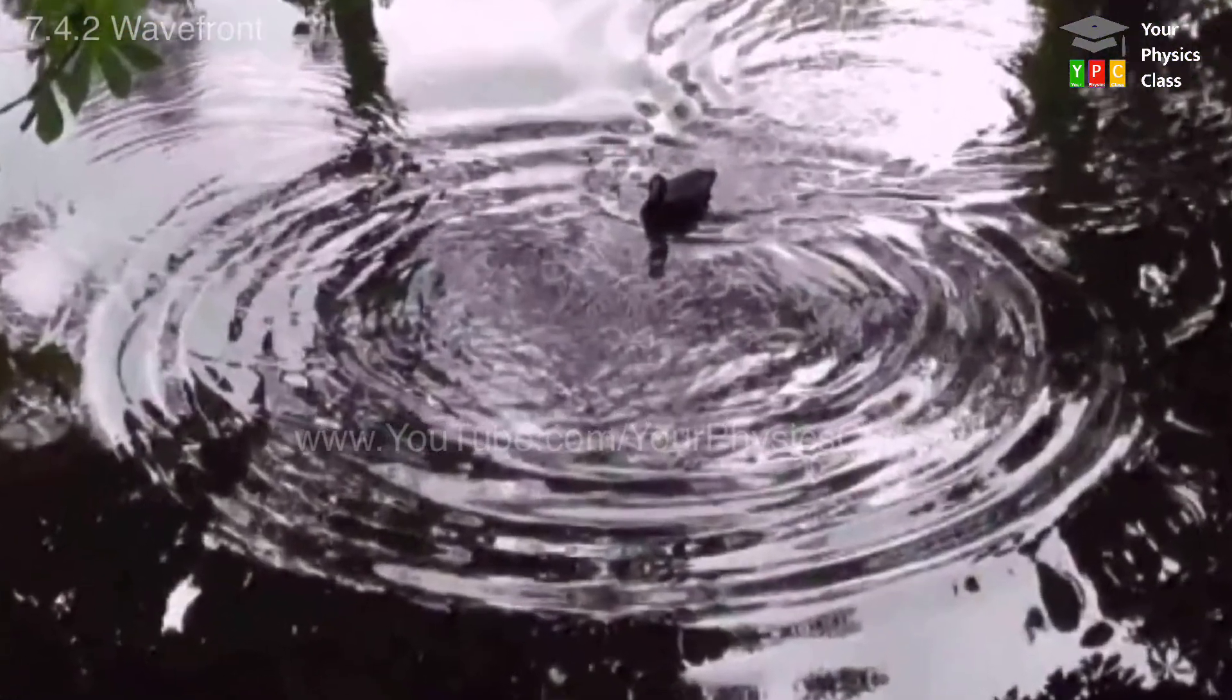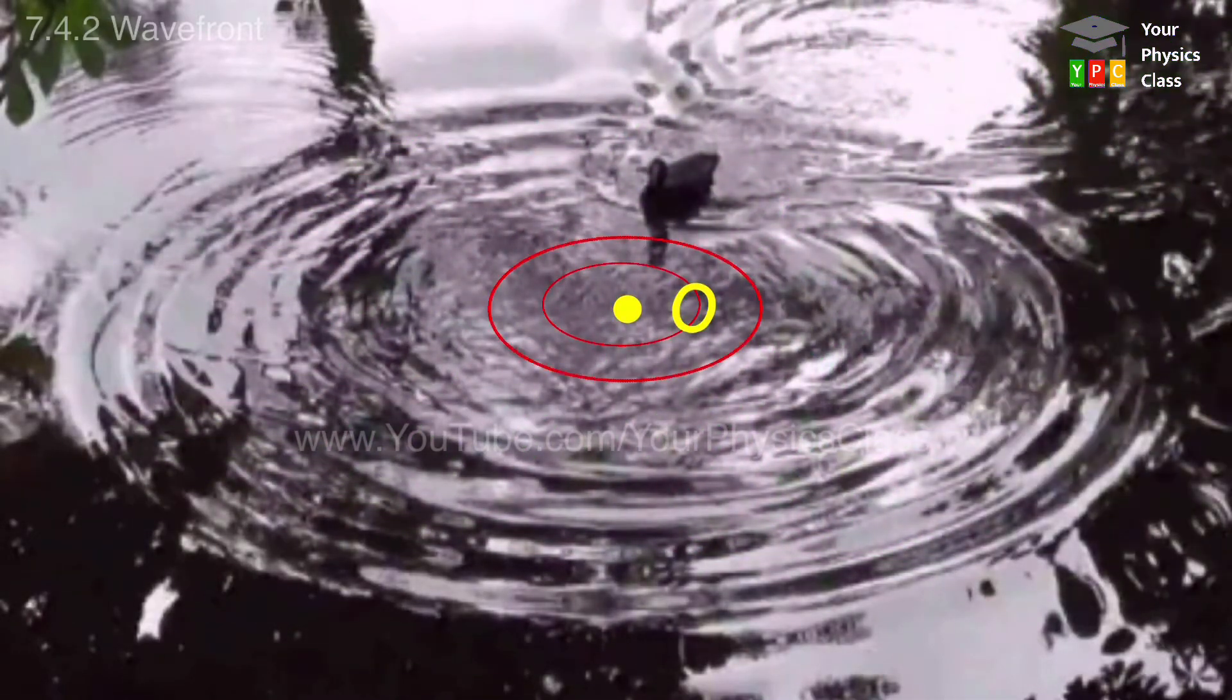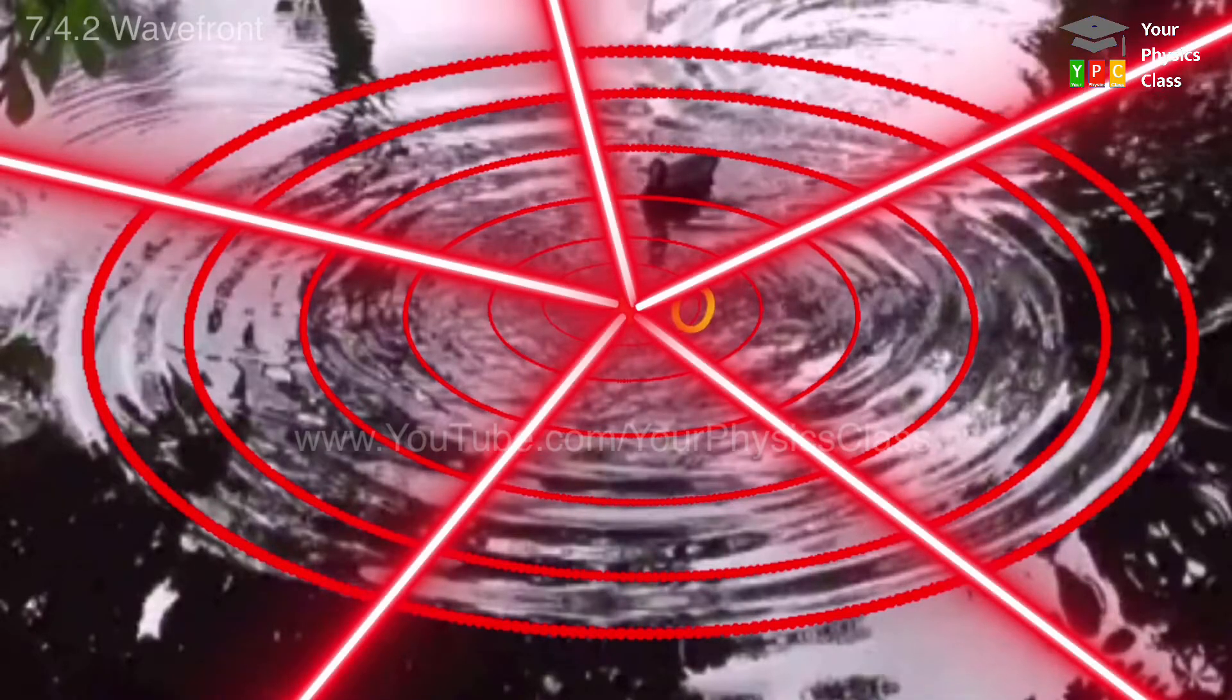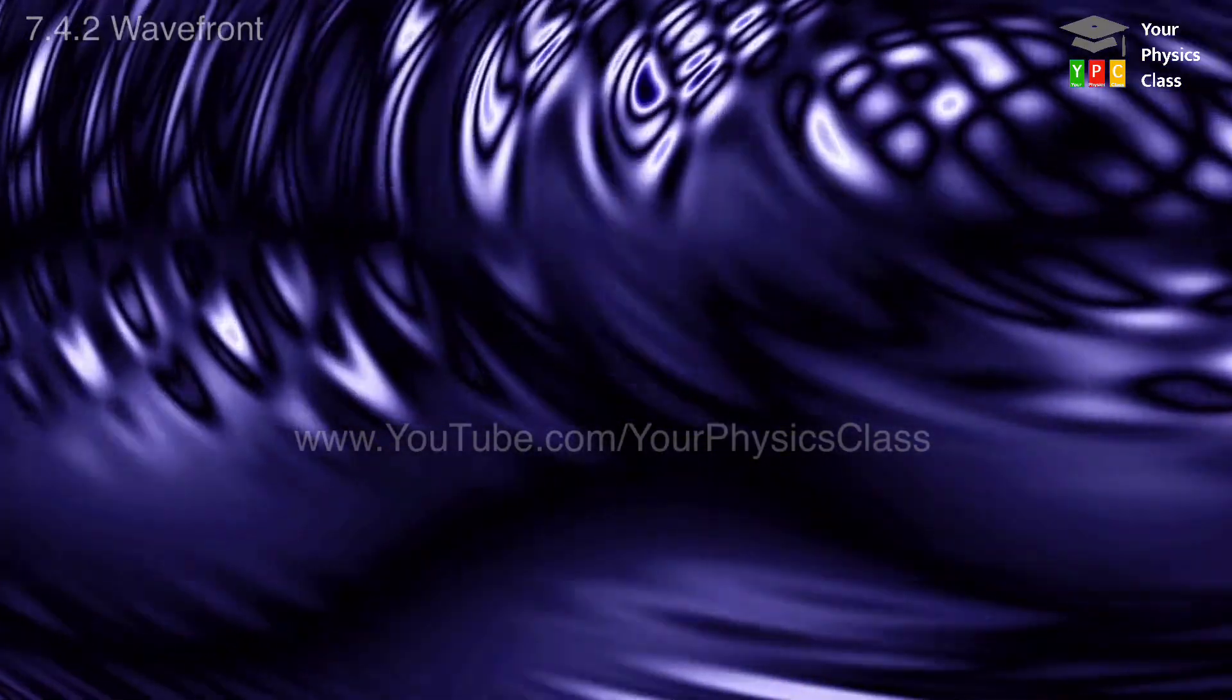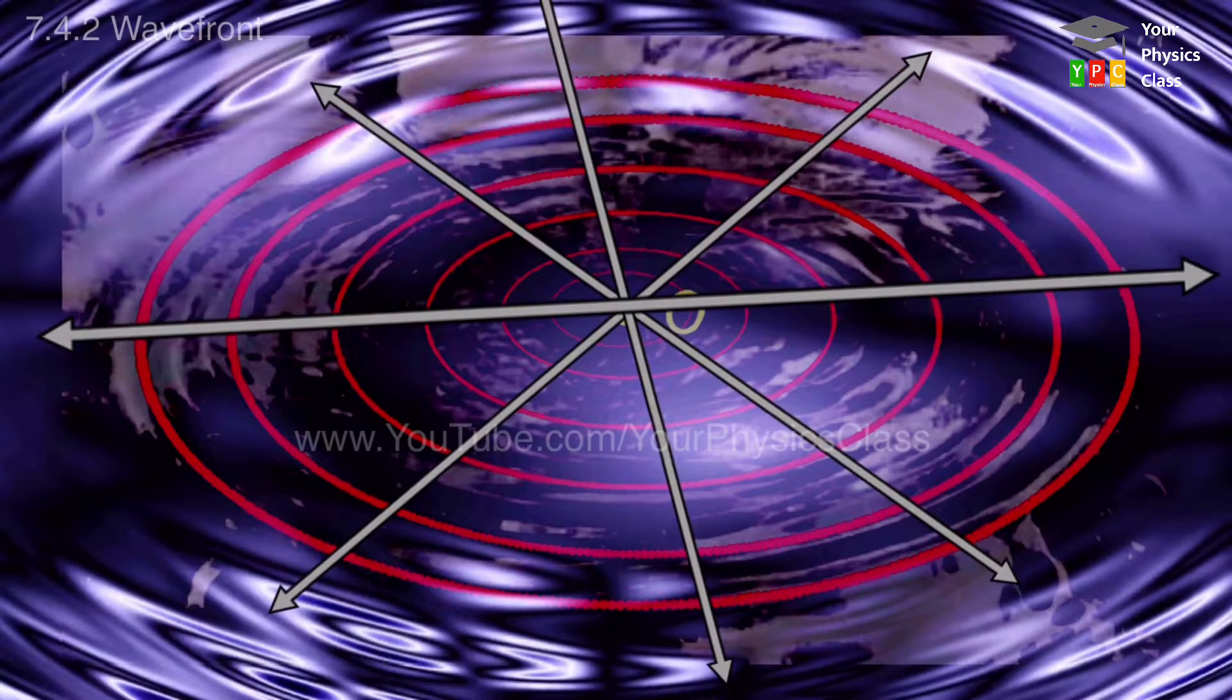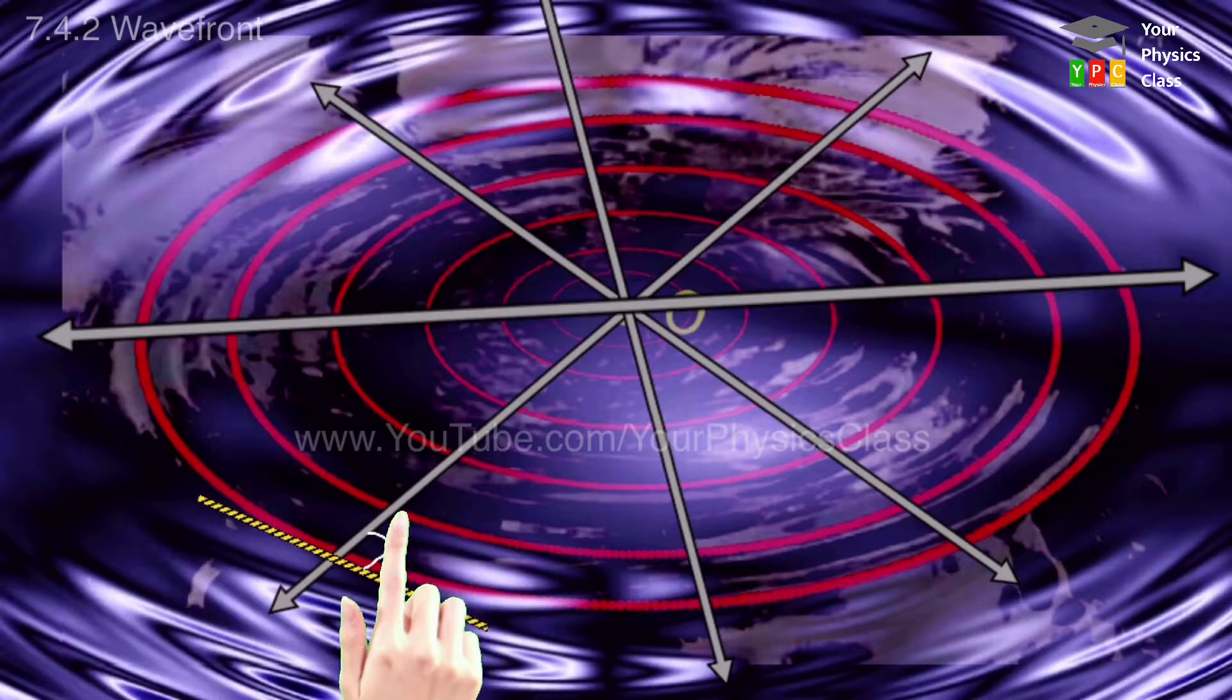Thus, the wavefront is the locus of all points where waves starting simultaneously from point O reach at a given instant of time. In case of water waves, the wavefront are circles centered at O. The direction of propagation of the wave is perpendicular to the wavefronts, i.e., along the radii of circles. The speed with which the wavefront moves is the speed of the wave.